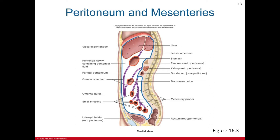The peritoneum is a layer of smooth epithelial tissue, and the mesenteries are connective tissue supporting organs in the abdominal cavity. Organs with no mesenteries are referred to as retroperitoneal — these include the duodenum, pancreas, ascending colon, descending colon, rectum, kidneys, adrenal glands, and urinary bladder, and they lie along the abdominal wall.